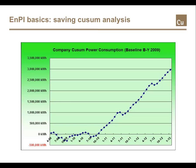If you express this as a Q-sum curve, it looks like this. However, if you took no improvement actions, the same amount of savings can be interpreted as a loss.